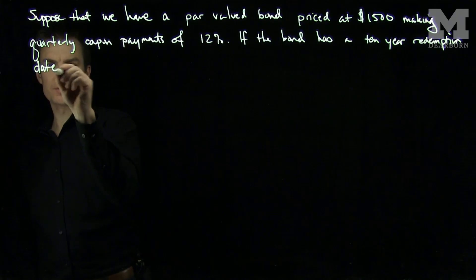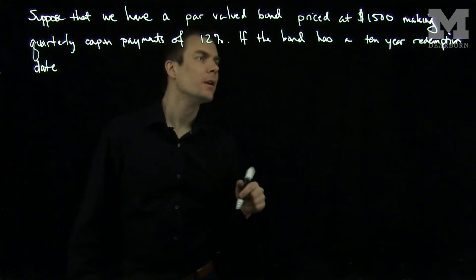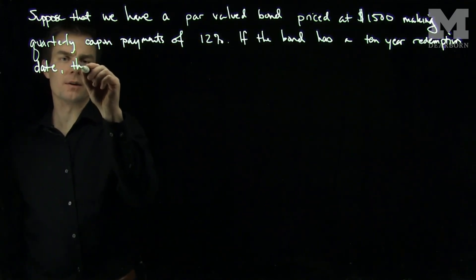Because duration is something a little bit different. So if the bond has a ten year redemption date, then find the yields.